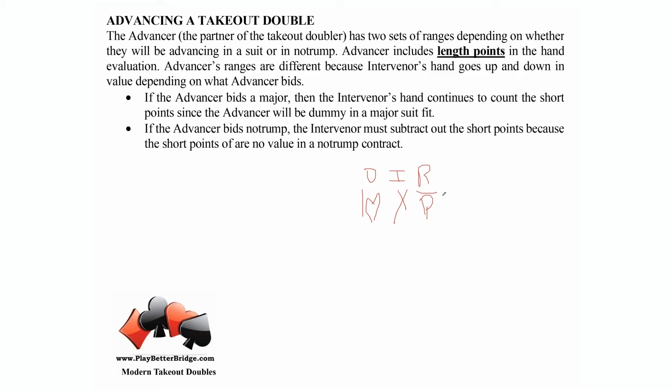Here comes the advancer. The advancer is the partner of the intervener, so we're going to look at advancer's options. Advancer is counting length points for the takeout double.